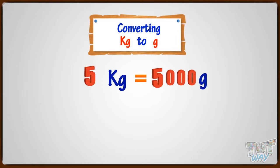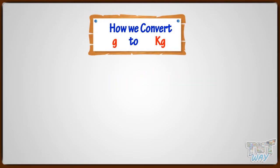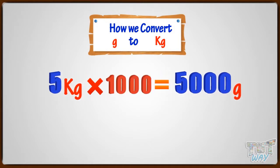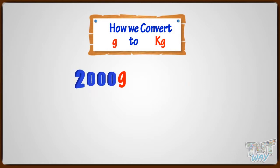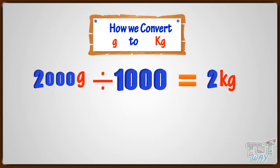Now let's learn how we convert grams to kilograms. Whenever we convert the bigger unit to smaller unit, we use multiplication. That is why we multiply with 1000 to convert kilograms to grams. And whenever we convert the smaller unit to bigger unit, like we have to convert grams to kilograms, we will be dividing. That is, we will divide by 1000 to convert grams to kilograms.